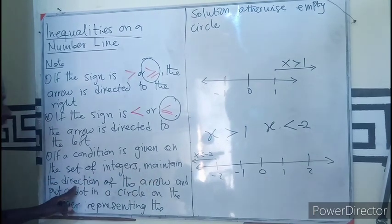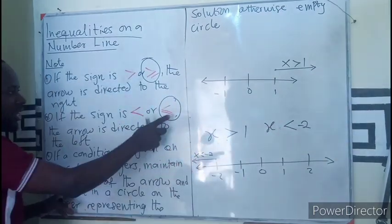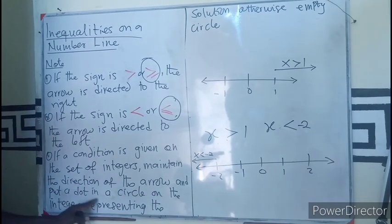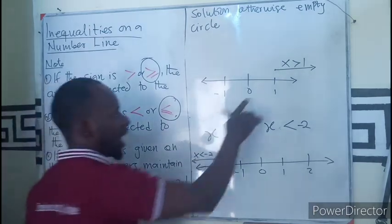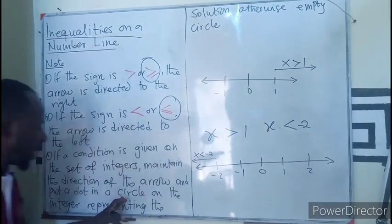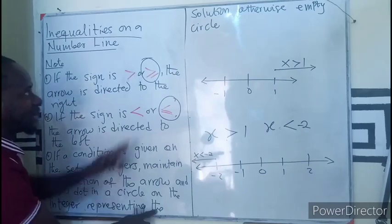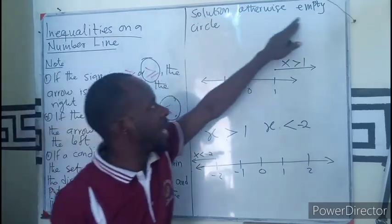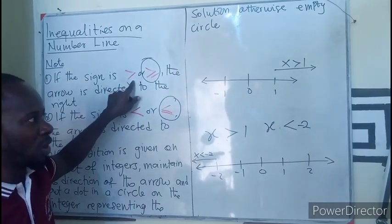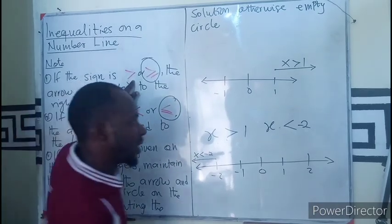maintain the direction. As in this sense, we maintain this direction. As in this sense, we maintain the left direction of the arrow and put a dot in a circle. You see, here, I just put a dot there. But because it is this, I am not going to put a dot in a circle. On the integer, which is this, representing the solution. Otherwise, an empty circle. Which one is otherwise? It is this that has a restriction. So now, let's reposition the representation.